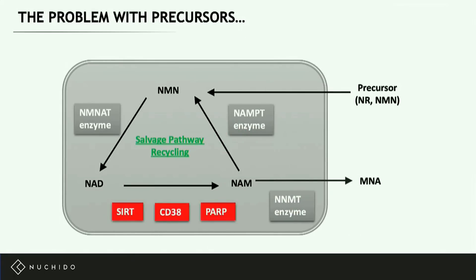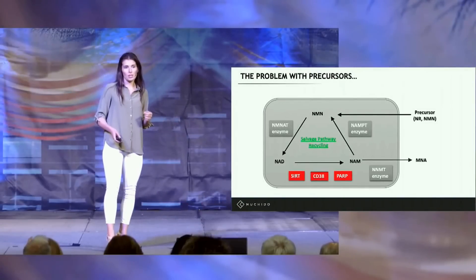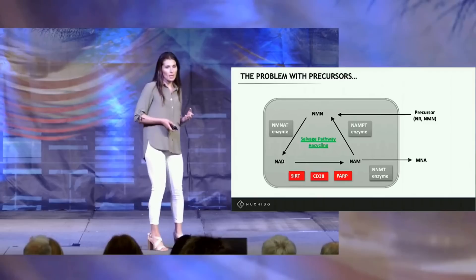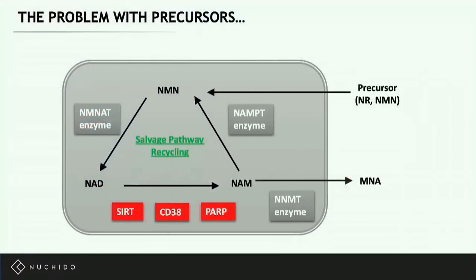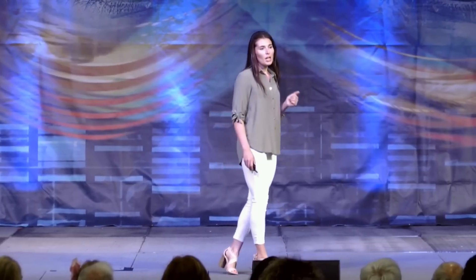Precursors have a slightly different problem. They are small enough to pass into the cell and be converted into NAD, giving you on average around a 40 to 60 percent boost in NAD levels. But precursor supplementation is not actually addressing the reasons why NAD is declining. Your NAD isn't declining because your cells lack precursors — it's declining because cells have become less efficient at making and recycling NAD, and because they're using more NAD up.